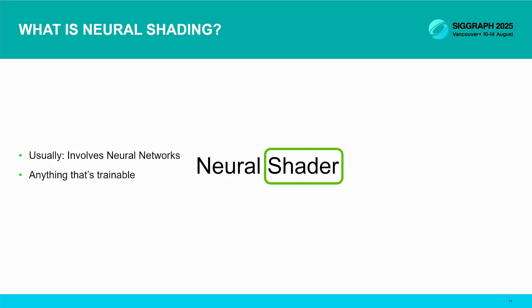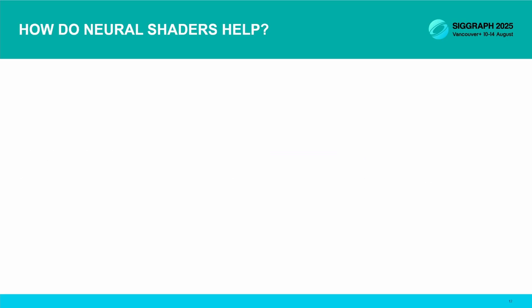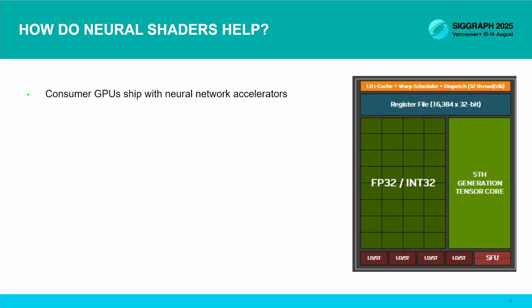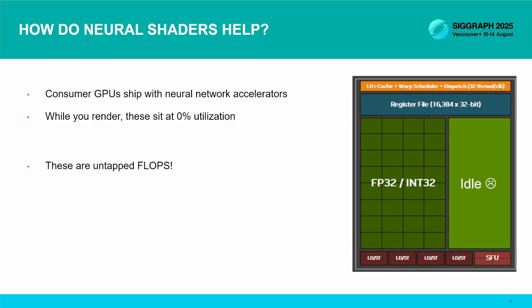How will this help with our problem? Consumer GPUs today ship with neural network accelerators, and right now they sit at zero percent utilization while you render. If they're lucky, they might get kicked on if you use DLSS after you're done rendering. But this is a considerable pool of flops that you're not using — untapped compute just sitting there. Neural networks are very friendly to hardware acceleration; these are some of the more efficient flops you can get your hands on. And this is important, because when the hardware doesn't get faster each year magically, you have to start using it more efficiently.